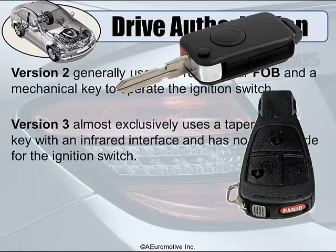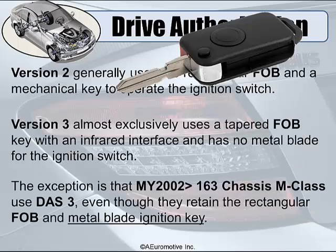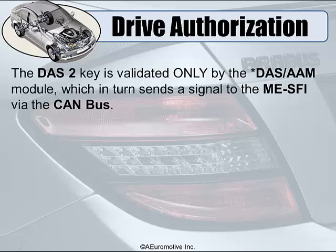The front of the DOS 3 key is a lens because it uses infrared technology. The exception to this rule is that in model year 2002, the 163 chassis M-Class uses DOS 3 even though it retains that rectangular key fob and also the blade for the ignition key.